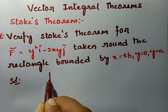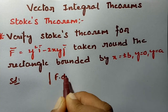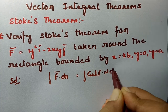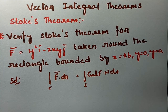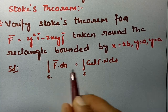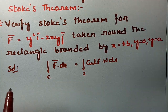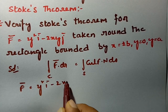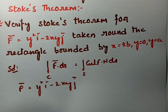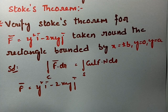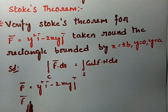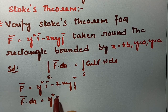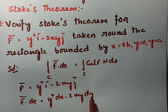According to Stokes theorem, the line integral of f̄ · dr̄ is equal to the surface integral of curl f̄ · n̂ ds. We have to verify both ways. f̄ is given as y²ī - 2xy j̄. So f̄ · dr̄ is nothing but y² dx - 2xy dy.